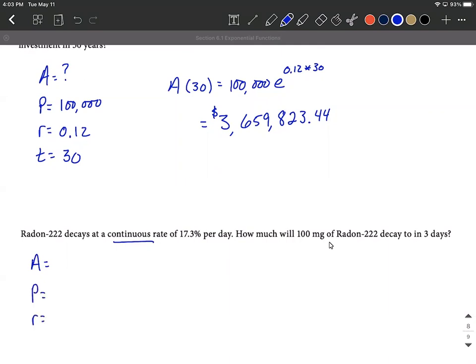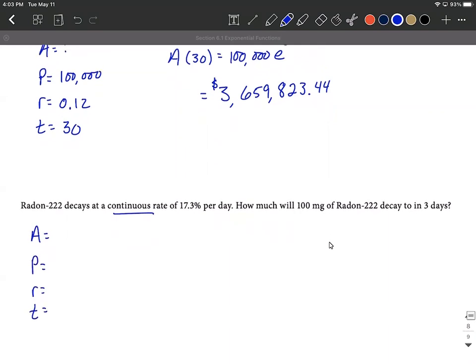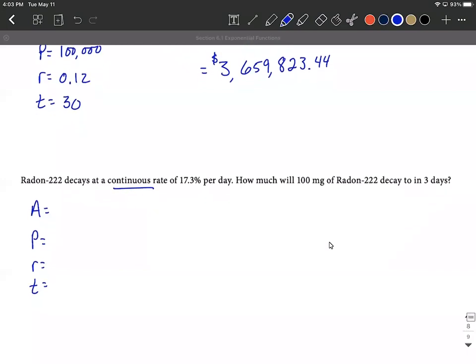So let's try to list out everything. A, P, R, and T. So as we take a look at this, continuous is pointing us towards, again, that A equals P times e raised to the R times T. But this time, it's decaying at a rate of 17.3% per day. So our rate, as we move two decimal places over, it's natural to think that's going to be 0.17.